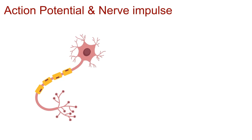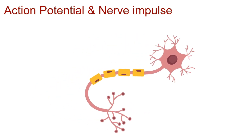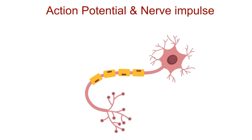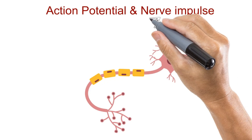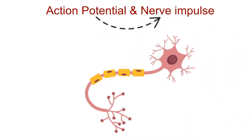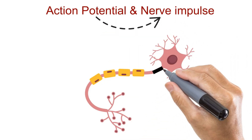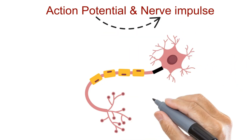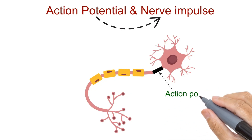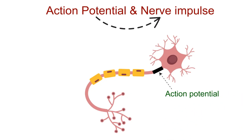Now let's make one thing clear. An action potential and a nerve impulse are not exactly the same thing, though they are closely connected. An action potential is a single electrical event, a brief change in the membrane's charge at one point on the neuron.